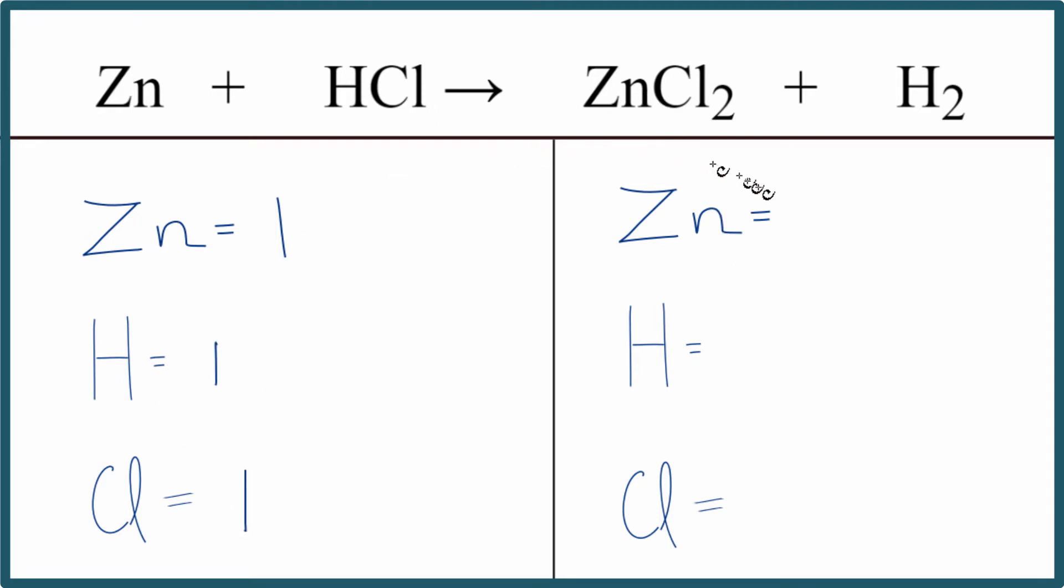On the product side, we have the one zinc, two hydrogens, and then the two chlorine atoms. So the equation, it's not balanced.